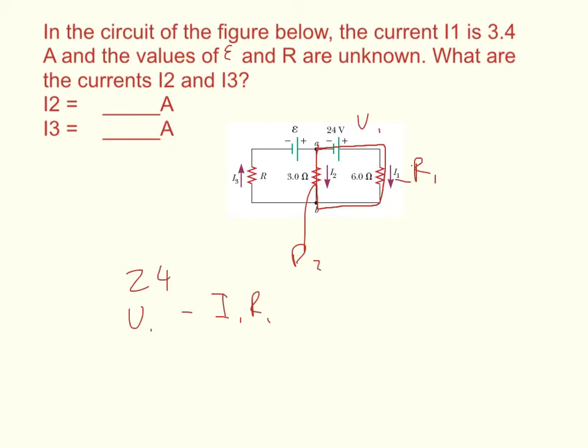Then we're going across the resistor. The arrow's pointing this way, so we're going to gain I2 R2.